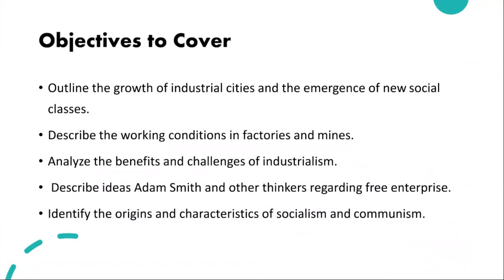We're going to start by looking at the profound impact of industrialization on society. The 18th and 19th centuries witnessed a significant shift in societal structure due to the rapid growth of industrial cities. With the advent of machines and the development of industries, people migrated from rural areas to urban centers seeking employment in factories. This massive influx of people into cities led to the rise of a new social order, as the traditional agrarian society transformed into an urban industrial one.